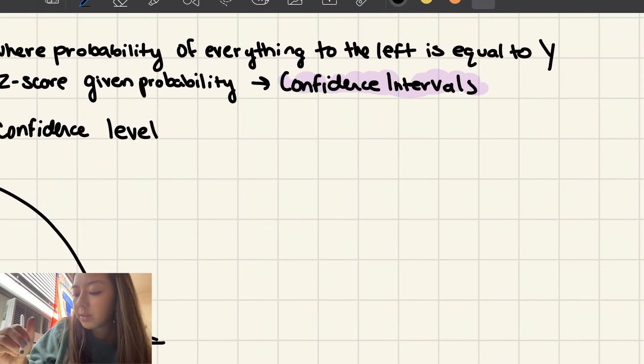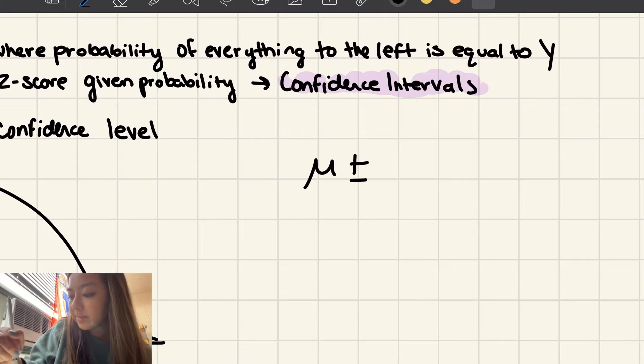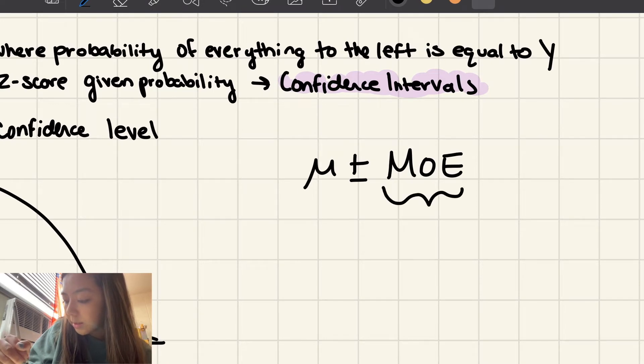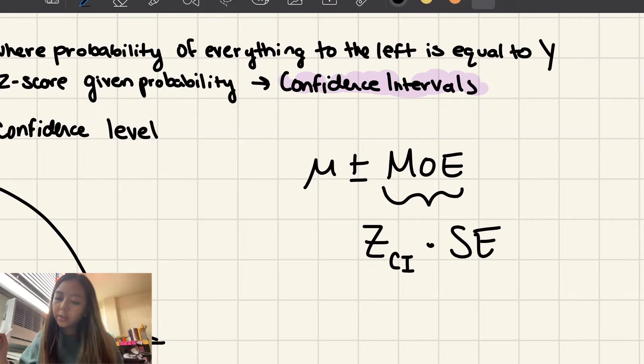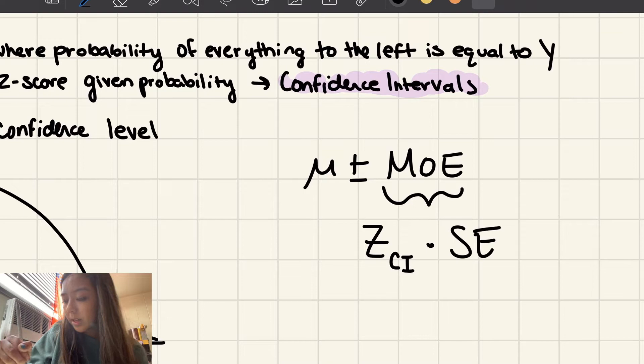So remember to find a confidence interval, it's going to be your mean, and you're going to add and subtract the margin of error. To find the margin of error, you're going to need the z-score of the confidence interval and multiply that by the standard error. And what norm.ppf does is going to help us find the z-score of the confidence interval.